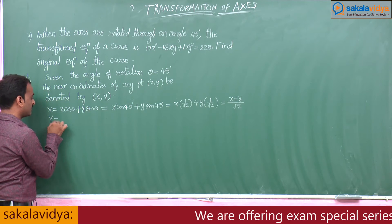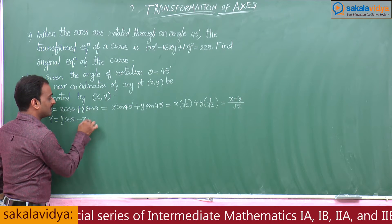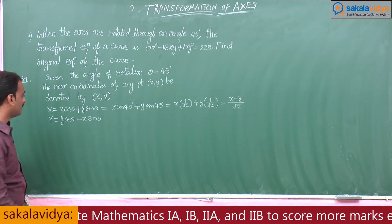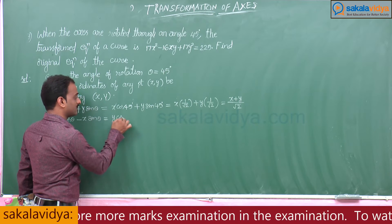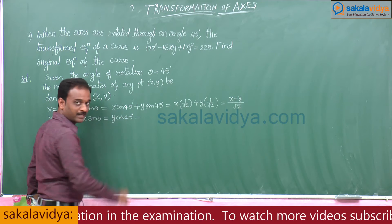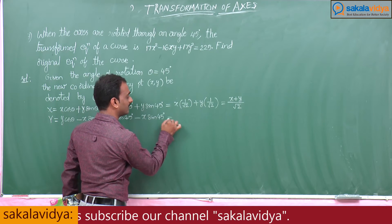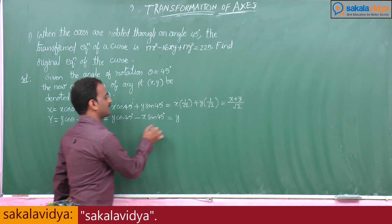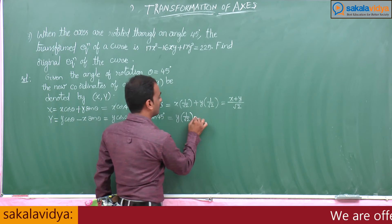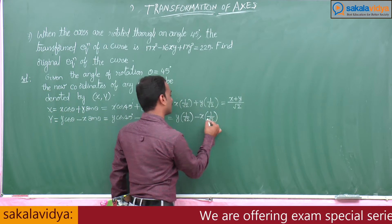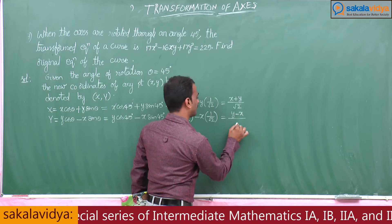Next, capital Y equals y·cosθ minus x·sinθ. So it becomes y·cos45° minus x·sin45°, which equals y·(1/√2) minus x·(1/√2). By taking LCM, we get capital Y equals (y minus x)/√2.